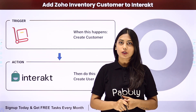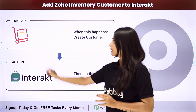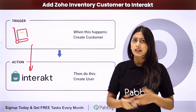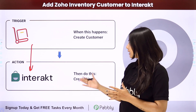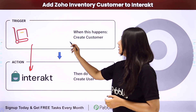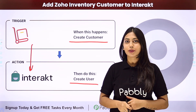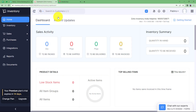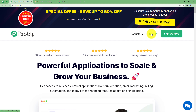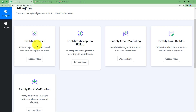Hello everyone. In this video we are going to learn how to add Zoho Inventory customers to Interact. We will integrate these two applications so that whenever a customer is created or updated in Zoho, a similar action will be performed in Interact as well. We will create this automation with the help of Pabbly Connect, where our trigger will be to create a customer in Zoho and our action will be to create a user in Interact.